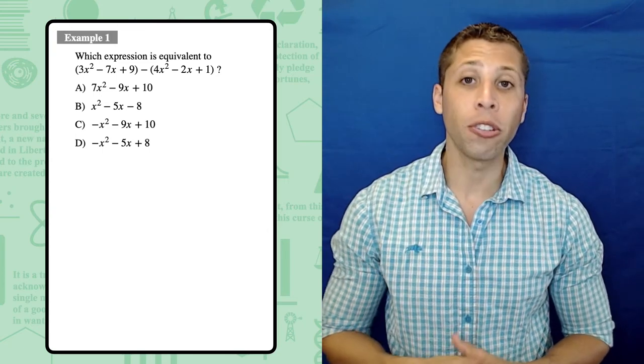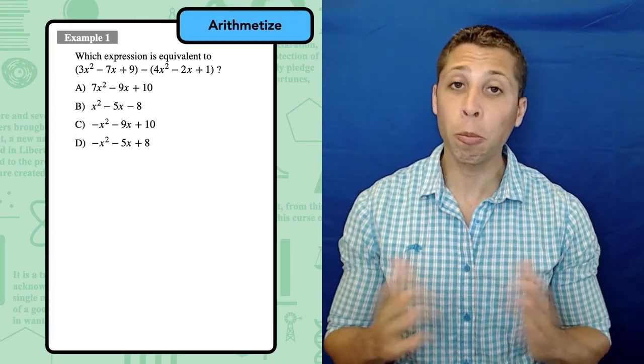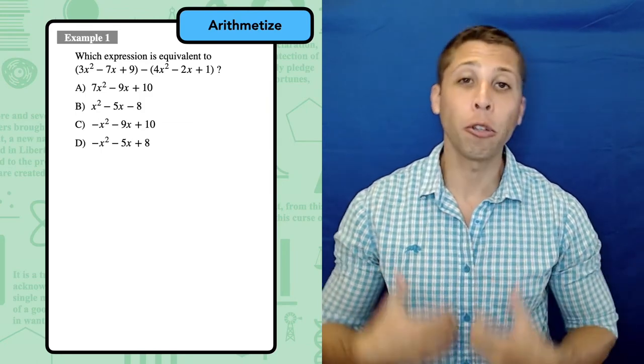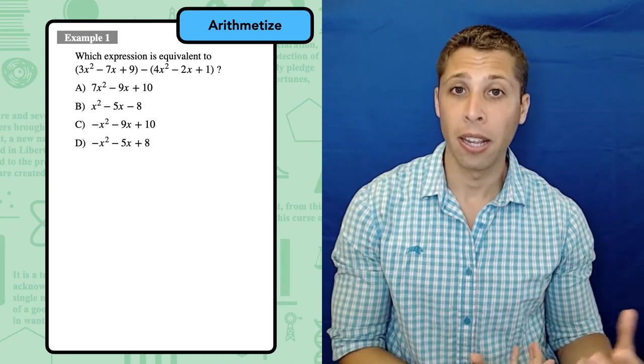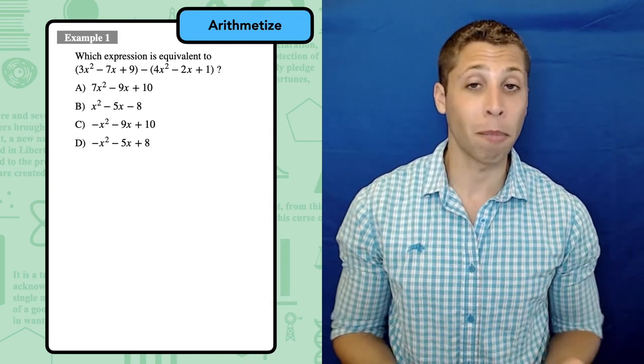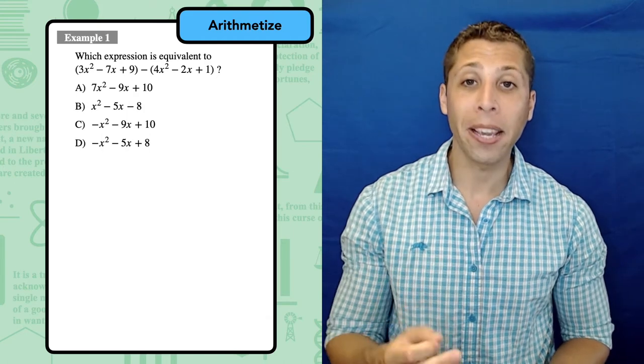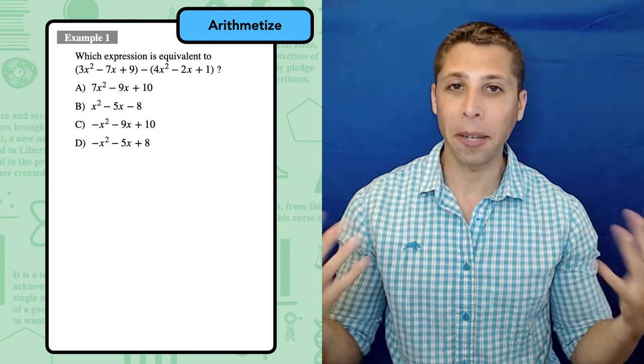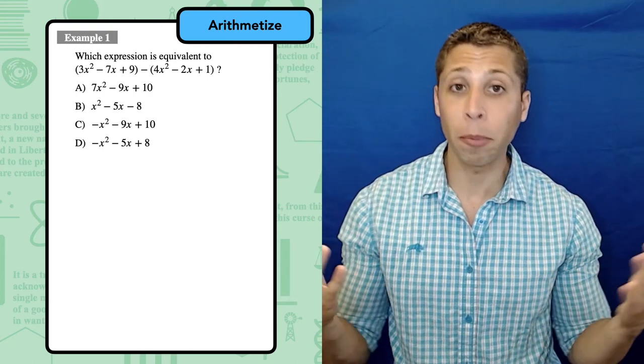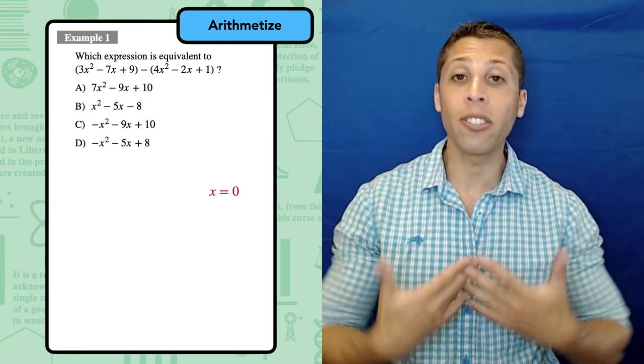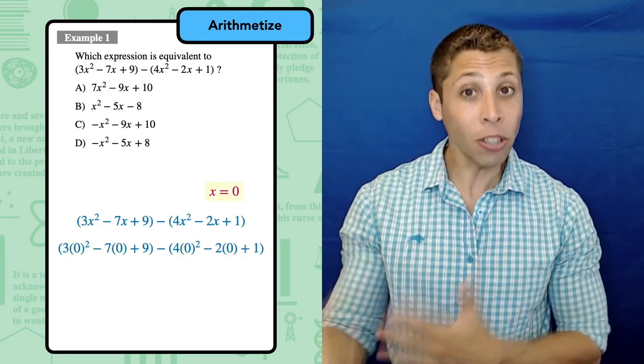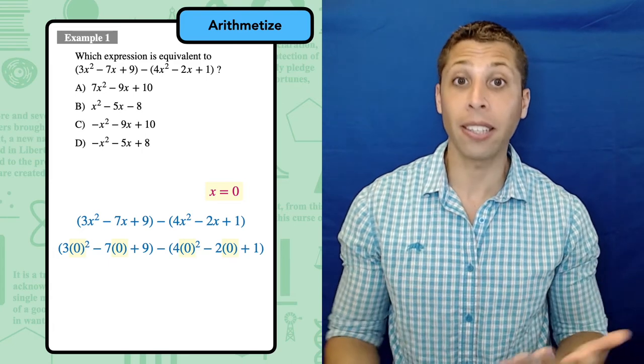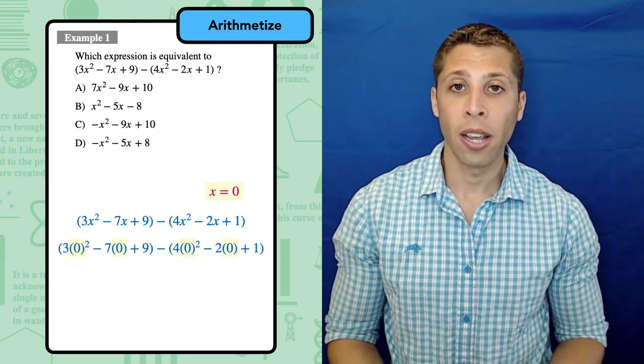But I'm going to solve this using the arithmetize strategy, which is probably new to you. It's kind of like guess and check in that we're trying to use numbers and arithmetic to replace letters and algebra. But this time the answer choices don't give me numbers to guess. I'm going to make up my own numbers to test in the equation. And since I'm lazy, I'm going to pick the laziest number. I'm going to pretend that x is equal to zero. What would happen? Well, the original equation would get a lot easier because all of these variables would basically disappear because they'd turn into zeros. In fact, my equation becomes nine minus one, which is very obviously eight.